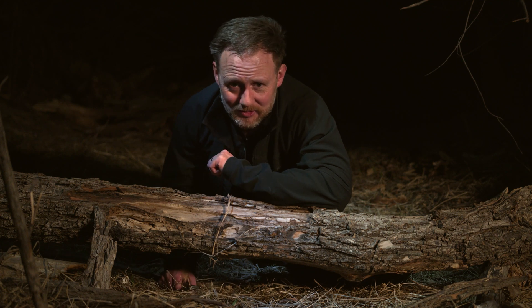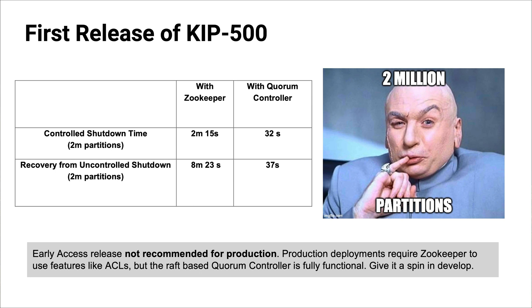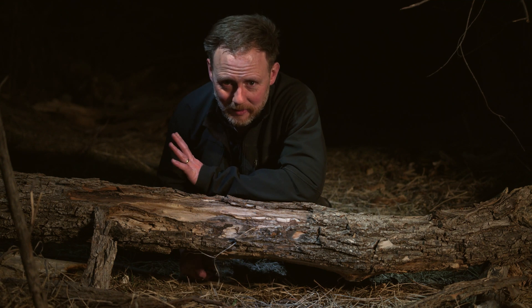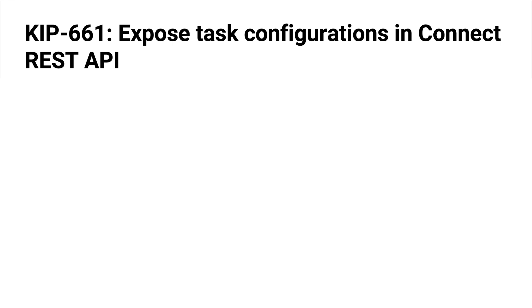The first release of KIP-500 is here — but I need to caution you before you break out the champagne: this is not production ready yet. Kafka's new built-in consensus protocol is not doing ACLs yet; if you want ACLs you still need ZooKeeper. But you should start working with this in test and development environments. There are impressive performance improvements: with two million partitions, controlled shutdown goes from 2 minutes 15 seconds with ZooKeeper down to 32 seconds with the quorum controller, and uncontrolled shutdown goes from 8.5 minutes to 37 seconds. KIP-500 merged into a formal release — development only, but this is a big deal.